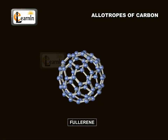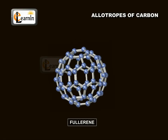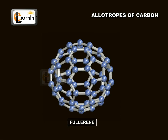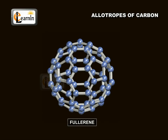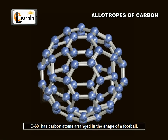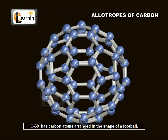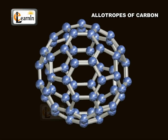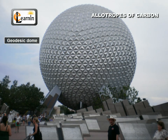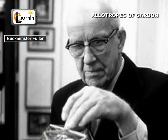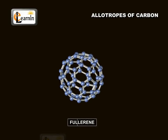Fullerenes form another class of carbon allotropes. The first one to be identified was C60, which has carbon atoms arranged in the shape of a football. Since this looked like a geodesic dome designed by the US architect Buckminster Fuller, the molecule was named Fullerene.